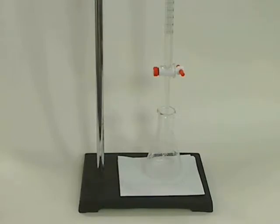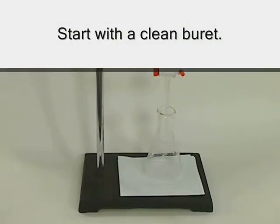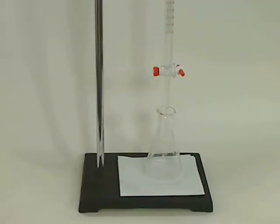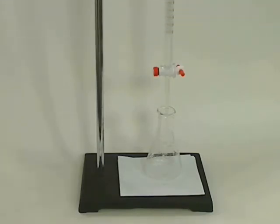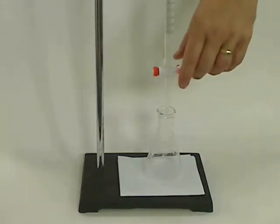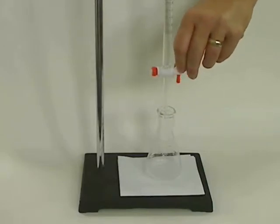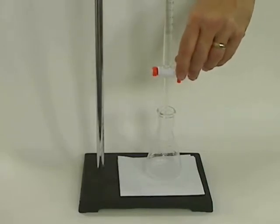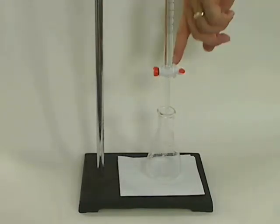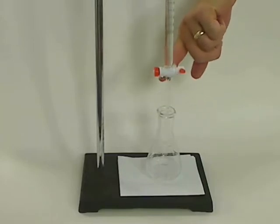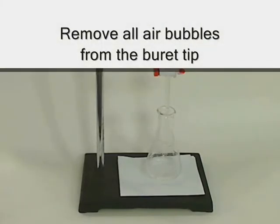The first thing you want to start off with is a clean burette, then rinse it several times with your titrant. You don't need to fill it all the way up. Add 10-15 milliliters, swirl it around, and make sure you let some of the titrant go out of the tip. It's important to thoroughly flush the stopcock and the tip with your titrant. This is also a very good time to get all the air bubbles out of the tip, and we'll talk about that in just a second.